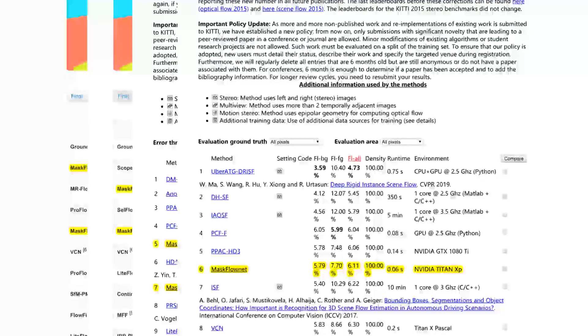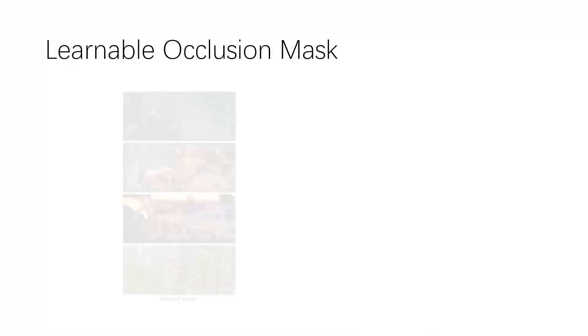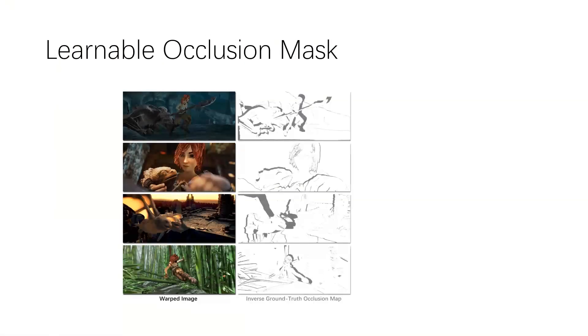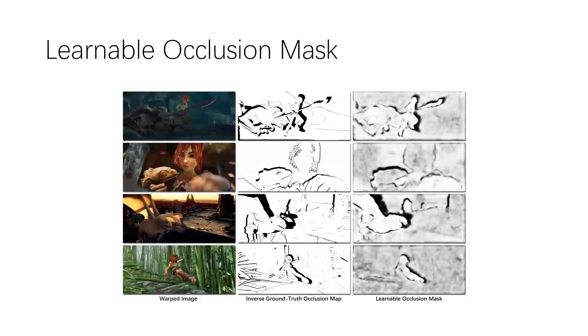Now, let's have a look at how each component works. This figure qualitatively demonstrates that the learned occlusion mask matches the inverse of ground truth occlusion fairly well, even though it is learned without any explicit supervision.